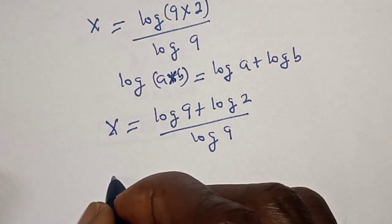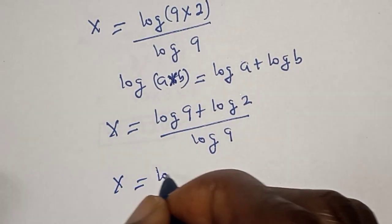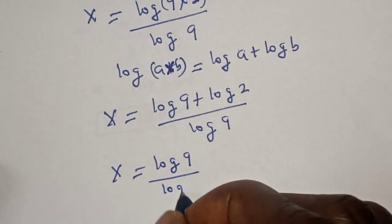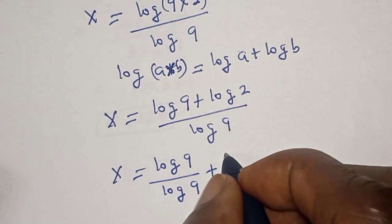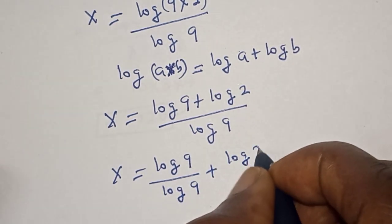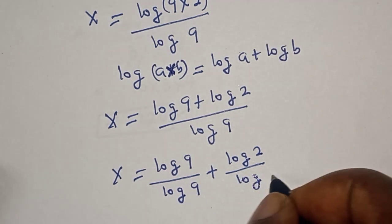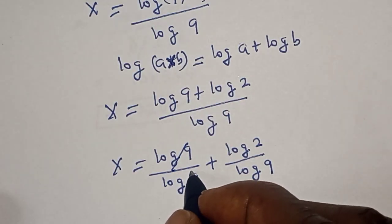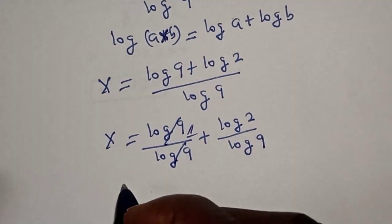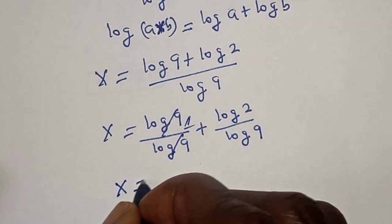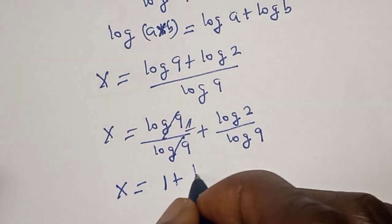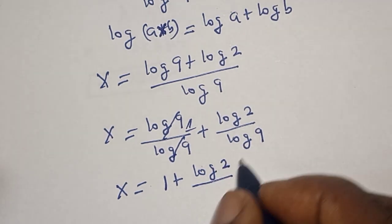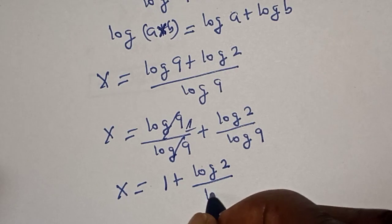Then we can split this: s is equal to log 9 over log 9 plus log 2 over log 9. This cancels, so s is equal to 1 plus log 2 over log 9.